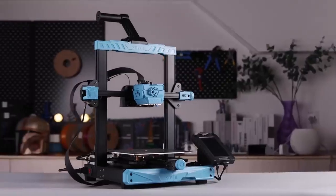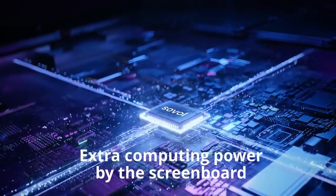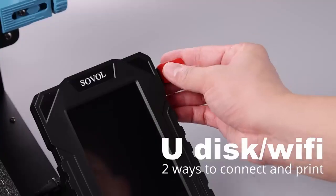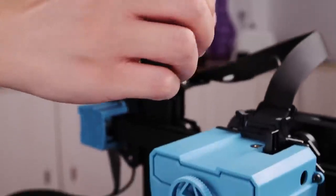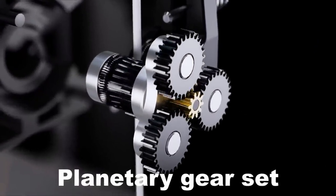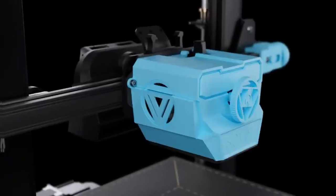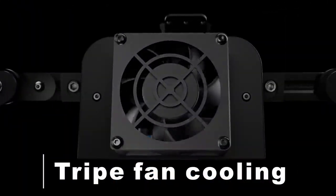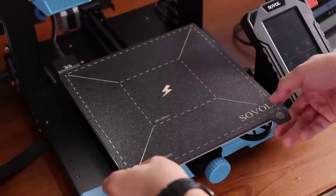Manufactured by Sovol 3D, it's known for its large build volume, which is great for printing larger models or multiple smaller ones simultaneously. The SV07 features a direct drive extruder which can provide better control over filament extrusion, especially with flexible materials. It also comes with a dual Z-axis design for stability and precision during printing. Additionally, it supports a variety of filament types, making it versatile for different printing needs.